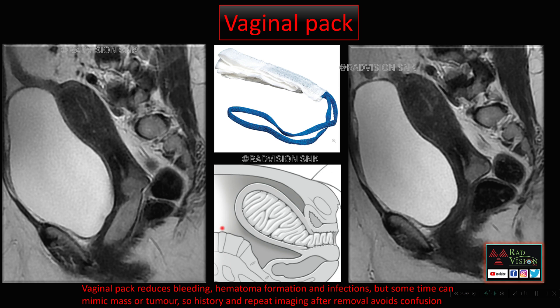Next, we'll see some interesting cases. This patient presented with excessive vaginal bleeding. There is hyperintensity in the posterior lip of cervix with edematous thickened posterior lip, and a well-defined hyperintense lesion noted in the vagina. With smooth borders and no adjacent changes in the vaginal wall, we suspected a foreign body. On taking history, it turned out to be a vaginal pack kept to stop the bleeding.